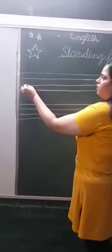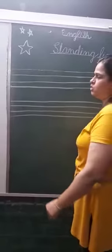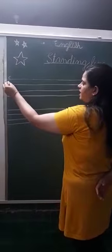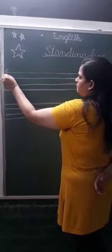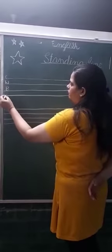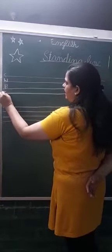We have four lines in our English notebook. First line is capital line. Second line is base line. Third line is base line. And fourth line is tail line.